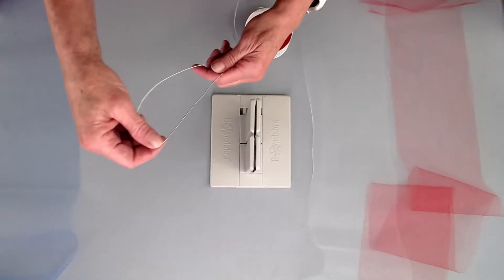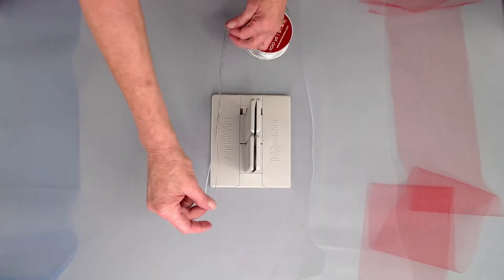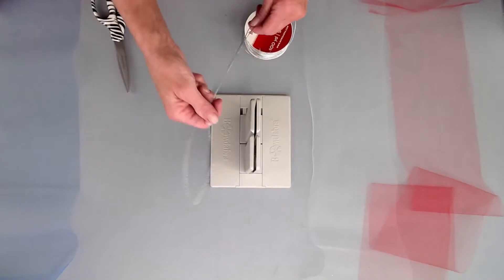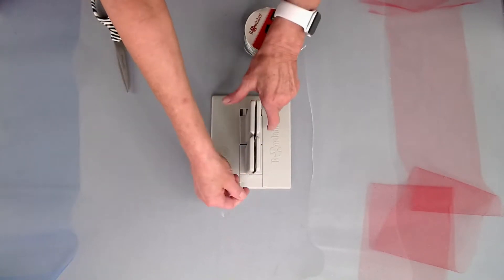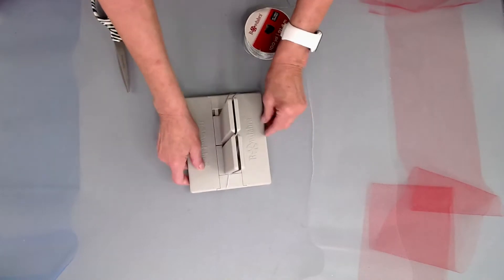The first thing that I'm going to do is take my Bowdabra Bow Wire, fold it in half, and then lay it down into the Bowdabra and just tuck the ends underneath so they stay out of my way.